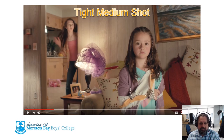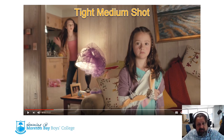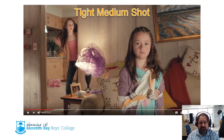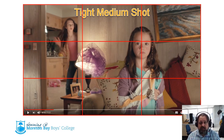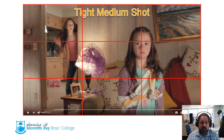Now we have a tight medium, moving closer in — we can't see the girl's waist, so this is getting a little bit closer in. Again, this girl is on the right-hand line of thirds and her face is on that intersection, which is a really strong point.